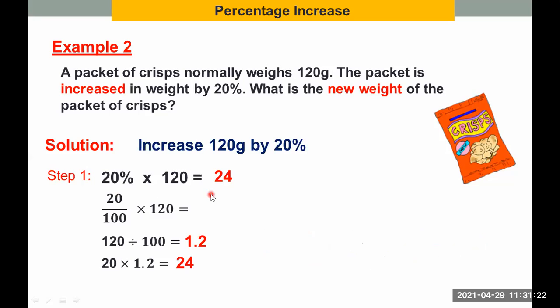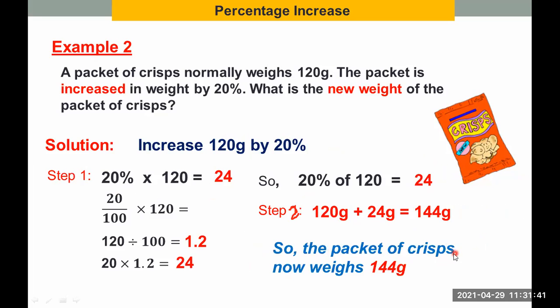Now, after getting 24, what we did is we add 24 to the original amount, which is now your step 2. This is your step 2. 120 plus 24 grams will give us 144 grams. So the packet of crisps now weighs 144 grams, which is very nice for us. Those who are crispy lovers, we really love this one. Done? Let's move on.